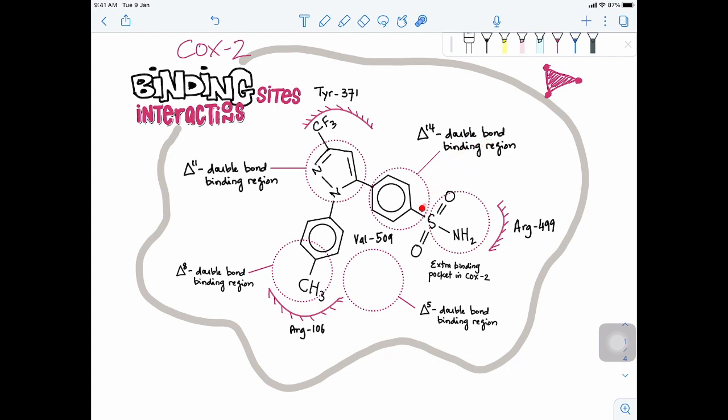As I mentioned earlier, this sulfonamide is again essential because if you see sulfonamide is quite hydrophilic and there's also this extra binding pocket in COX-2 which is also hydrophilic. So that gives the selectivity of this compound celecoxib in inhibiting the COX-2 enzyme.